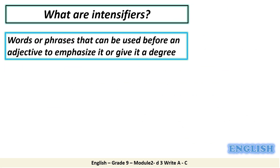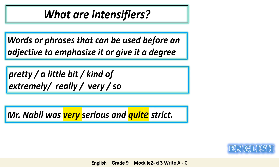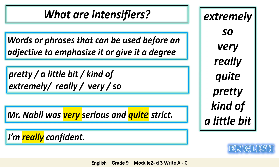What are intensifiers? Intensifiers are words or phrases that can be used before an adjective to emphasize it or give it a degree. Such as: pretty, a little bit, kind of, extremely, really, very, and so. Look at this group of intensifiers — they are classified from the strongest at the top, 'extremely', to the weakest at the bottom, 'a little bit'.